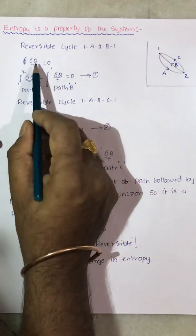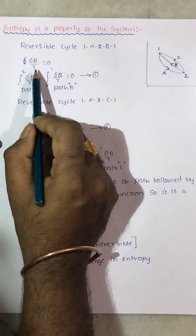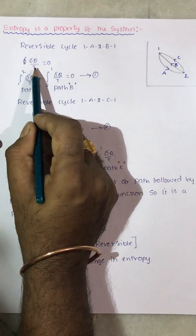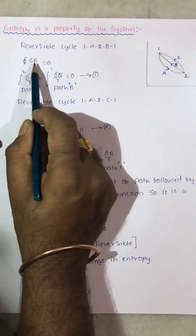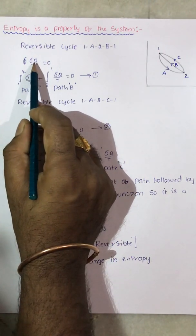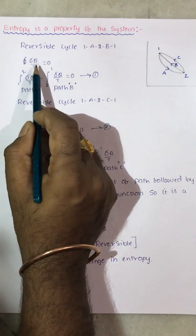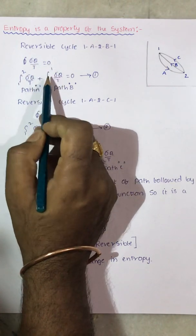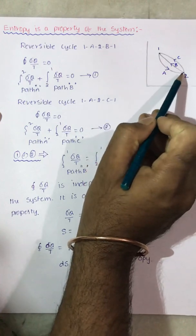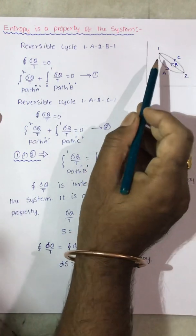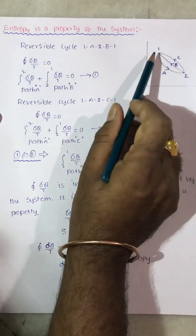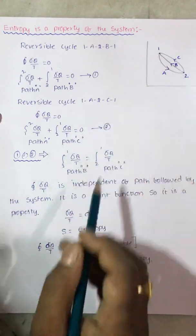Now, the cyclic integral equal to 0 means the sum of the ratios of heat interactions to the corresponding temperature is equal to 0. There are two processes: 1 to 2 and 2 to 1. So there must be two heat transfers, two heat interactions, and two temperatures.